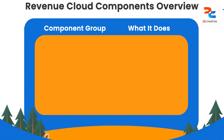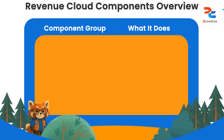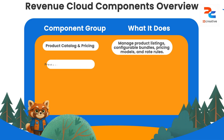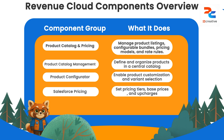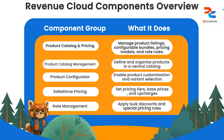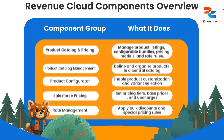Let's go one step deeper into all those components available in Revenue Cloud. You have your product catalog and pricing, which contains product catalog management, product configurator, Salesforce pricing, and rate management. As a product catalog holds the products, you configure those products and add a pricing model. Rate management means you modify the rate based on requirement — for example, someone ordering a bulk shipment of 10 iPhones as a B2B customer gets a 5% discount. That's part of rate management.